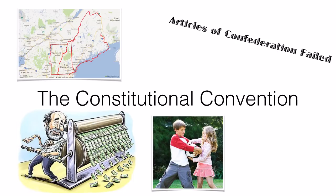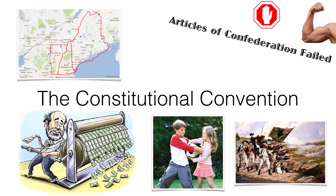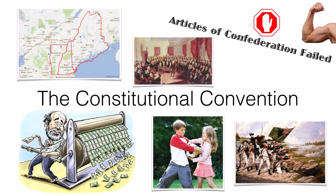How could a new and more powerful government be created without the citizens who fought for independence from a king becoming scared the new government would be powerful enough to take away their rights? It would have to be a government that had the power to make states work together, while at the same time having limits to its power. In 1787, a group of American leaders would meet in what would be known as the Constitutional Convention, where the Constitution we have today would be created.